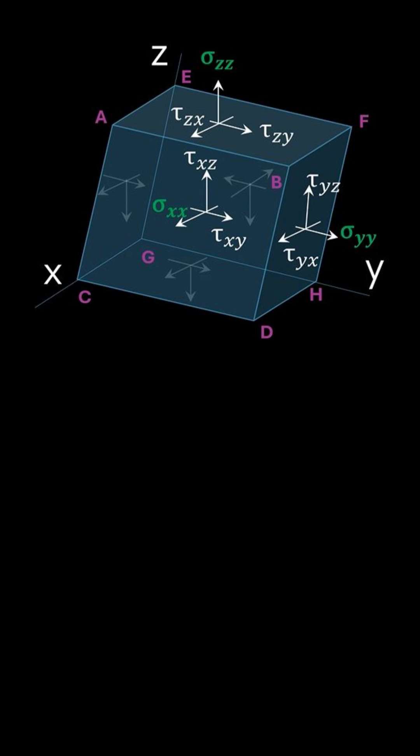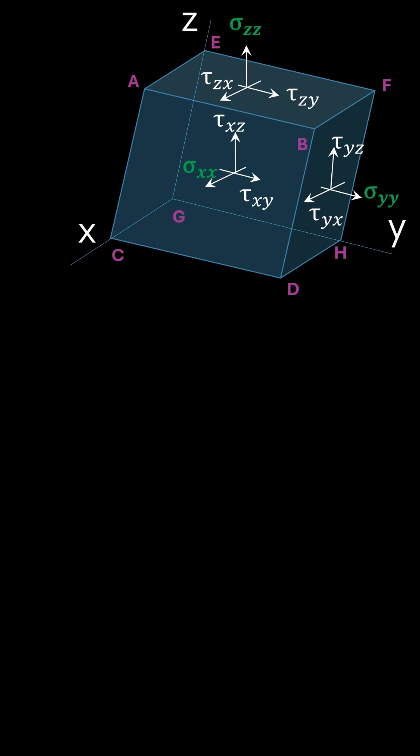Since the side length of the cube approaches zero, the stress components represent the actual stress state at the considered point. Each face of the cube has one normal stress component and two shear stress components, leading to a total of nine stress components.